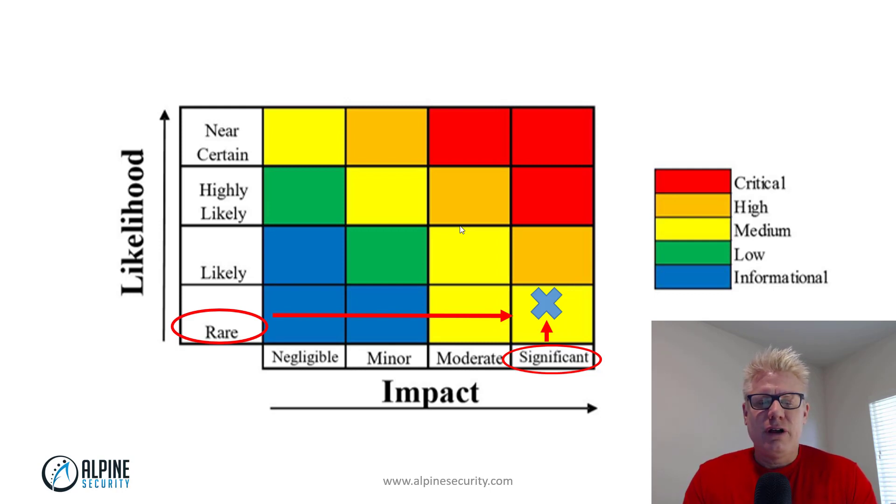Now, the likelihood of somebody being able to exploit your Windows 2016 server has gone from rare to near certain. Because there's an exploit out there that has been incorporated into Metasploit that is very easy to use. Pretty much anybody can use it with a little bit of training. So the likelihood or the probability has gone from rare to near certain, like this picture here shows.